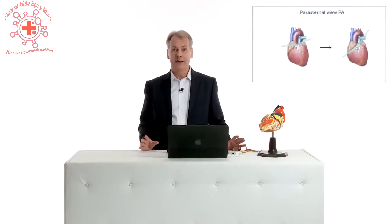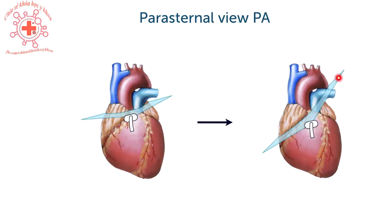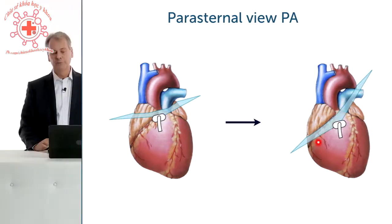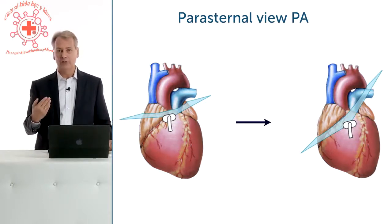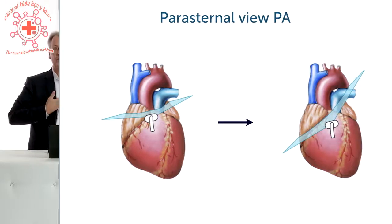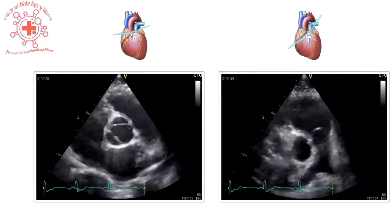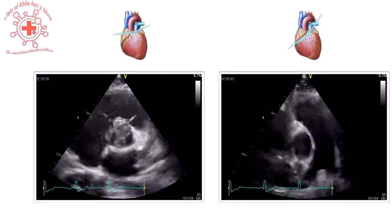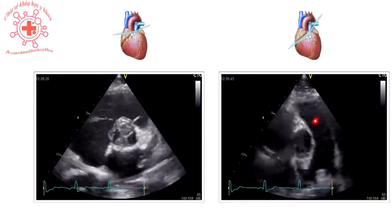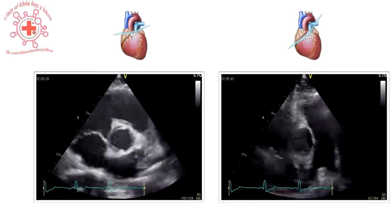From the parasternal short axis view, you just have to perform a small maneuver to get a better view of the pulmonic valve. In this modified view of the pulmonary artery and pulmonic valve, the orientation is a little more oblique — you rotate the transducer clockwise and tilt a little bit to get more shallow, so you're closer to the pulmonic artery near the chest wall. Comparing the two views, you will appreciate that the pulmonic artery and pulmonic valve can be seen much better in the modified view, where you can even see the right and left pulmonic artery. Both of these views are part of a standard exam.